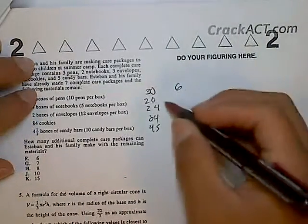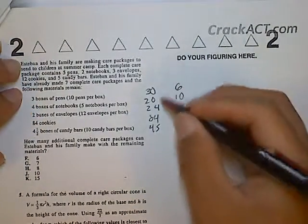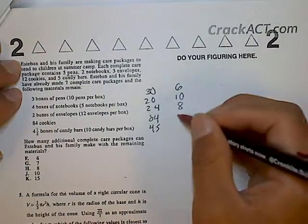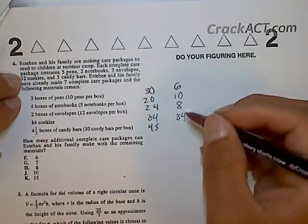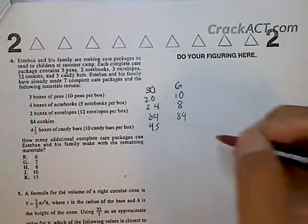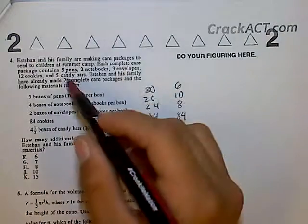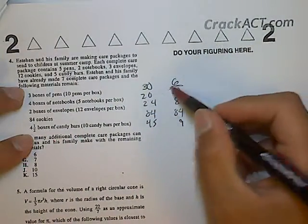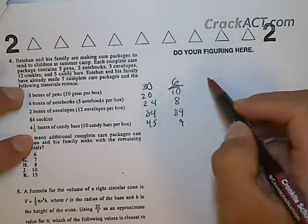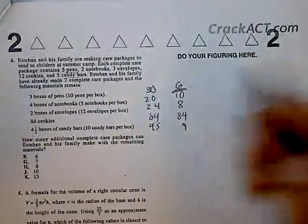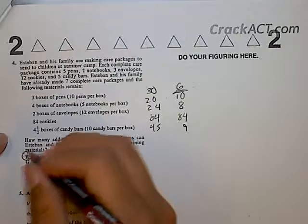You do that throughout: 20 divided by 2 is 10, 24 divided by 3 is 8, 84 stays the same, and 45 divided by 5 gives you 9. So you look at the numbers and see that 6 is going to be the one that runs out first. You can only make up to 6 care packages before you run out of one of the materials, so the answer is F, 6.